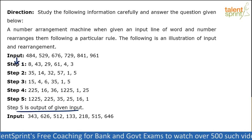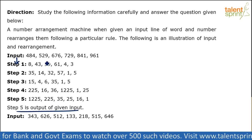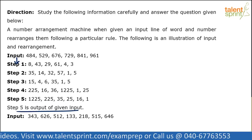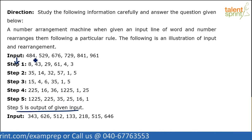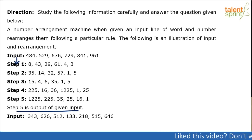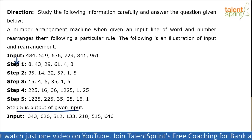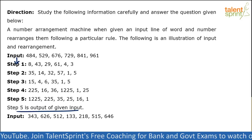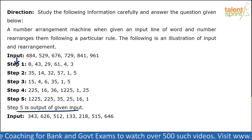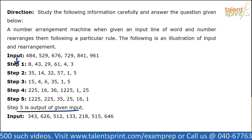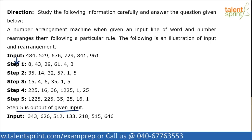So what do you think has happened? 484, 529, 676, 729, 841, and 961 have become 8, 43, 29, 61, 4, and 3. Now there is no formula that gives the answer directly — there is no shortcut which can tell you why 484 has become 8. The only way to do it is trial and error. You try with some logic; if you get it, well and good; otherwise, try with some other logic.